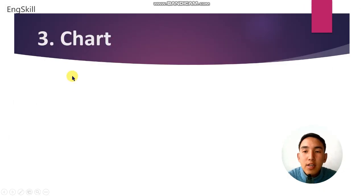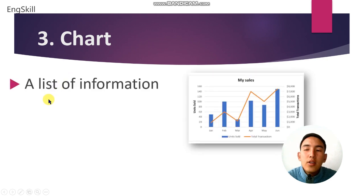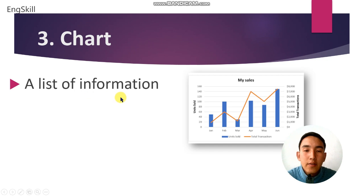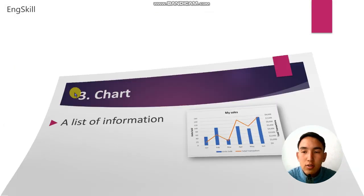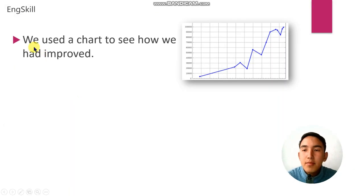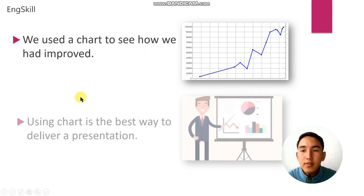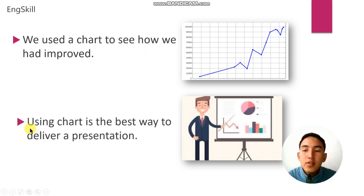Word number 3 is chart. Chart is a list of information. This is a chart. For example: we used a chart to see how we had improved. Example number 2: using a chart is the best way to deliver a presentation.